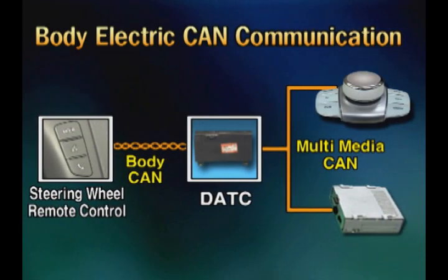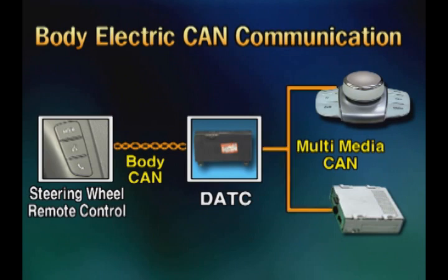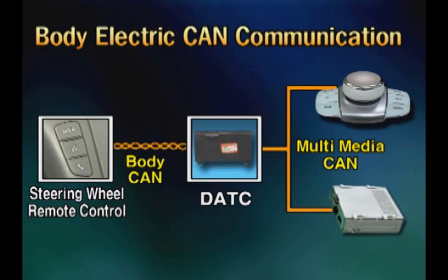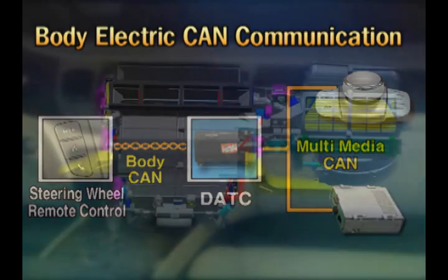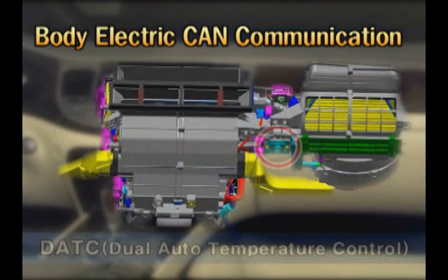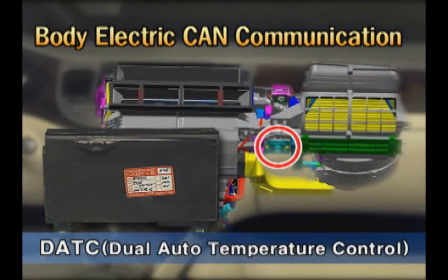The multimedia system uses optical fiber communication via optical cable. The dual automatic temperature control (DATC) plays the role of a gateway linking the optical communication and low-speed CAN. The DATC unit is installed at the middle of the HVAC.